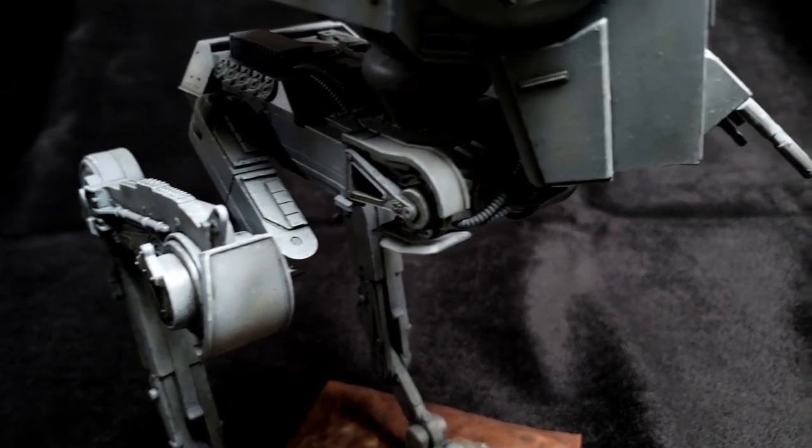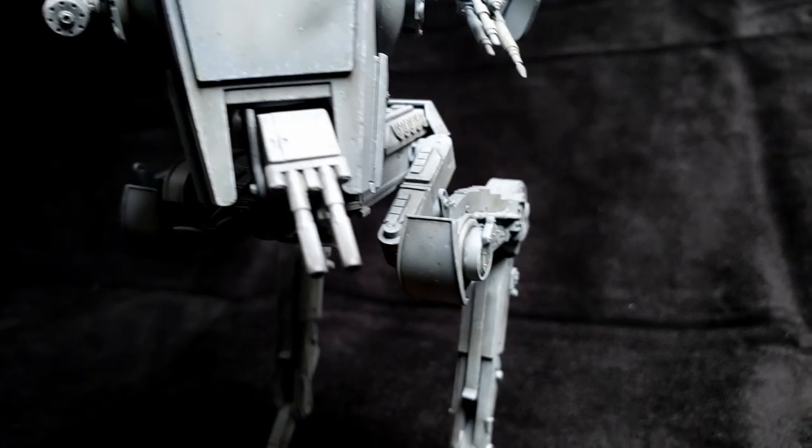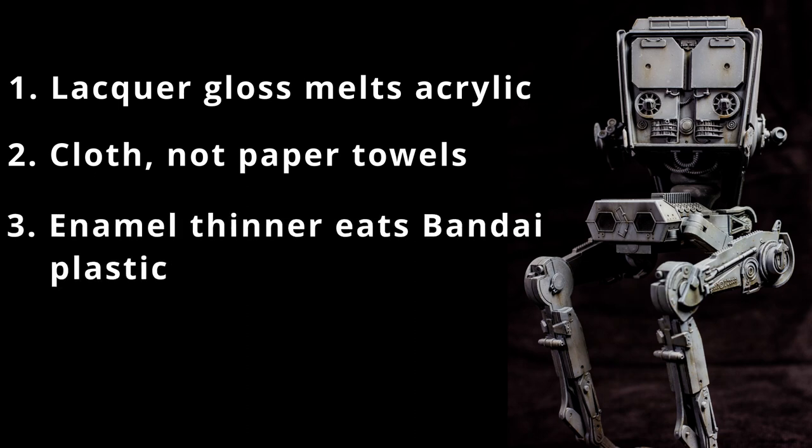I learned a lot throughout the process but there's three key things that I'm going to take away into the next build and every build thereafter. Number one, lacquer gloss melts acrylic. I'll be using an acrylic base gloss coat over top of acrylic base paint from now on and avoid any unwanted interactions. Number two, I'll be using a cloth instead of paper towel to wipe away excess paint off of my brushes. I found that the paper towel was causing fibers to get caught in the brush and then transferred onto the model. And lastly number three, this is something that I had heard about in other videos, that enamel thinner can eat through Bandai plastic. I did find this out the hard way as a crack appeared in the hinge of the hip joint. Now it didn't destroy the model but it makes posing it just a little bit more delicate. So to avoid this in future Bandai kits I'm going to prime the insides of the pieces even if they are not going to be displayed. Hopefully this will keep the enamel thinner from eating away at the thinner plastic areas.